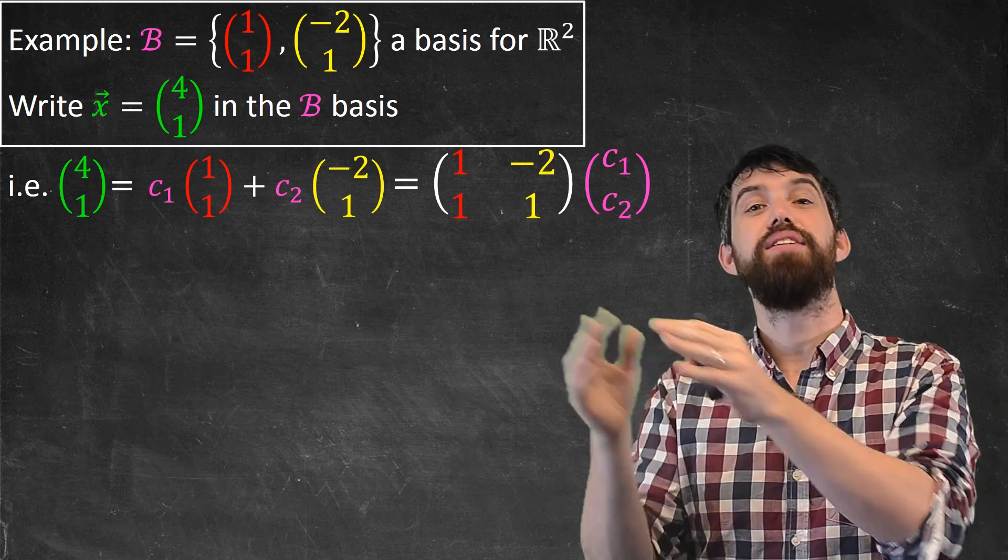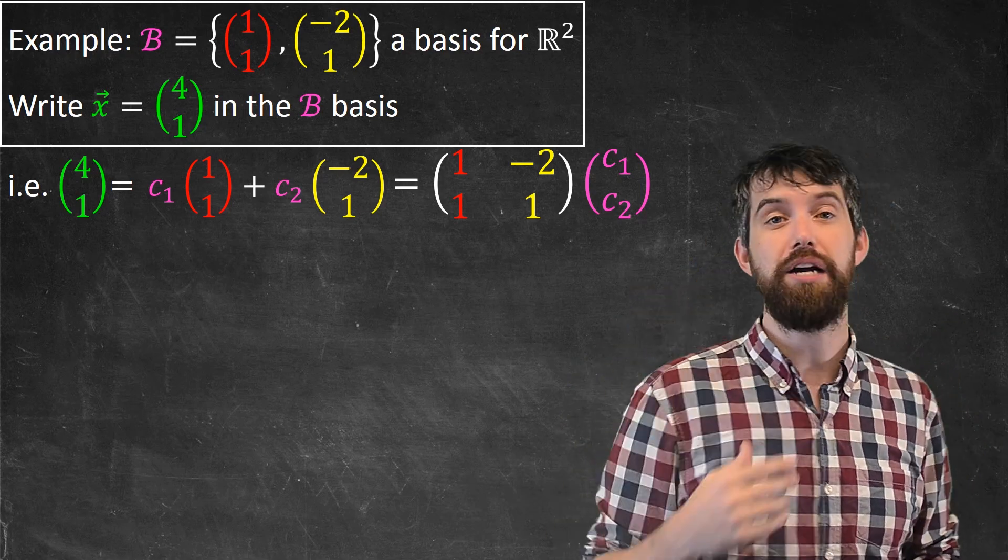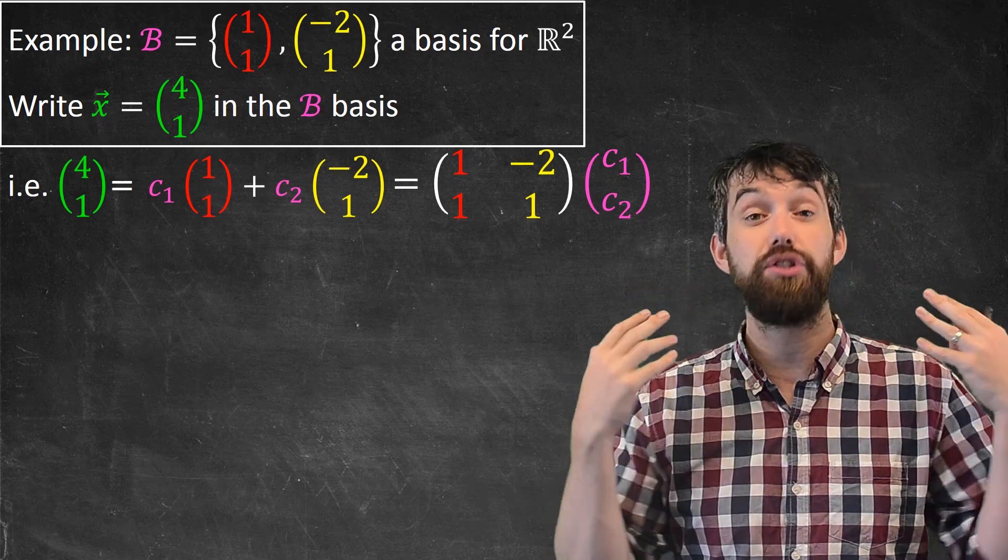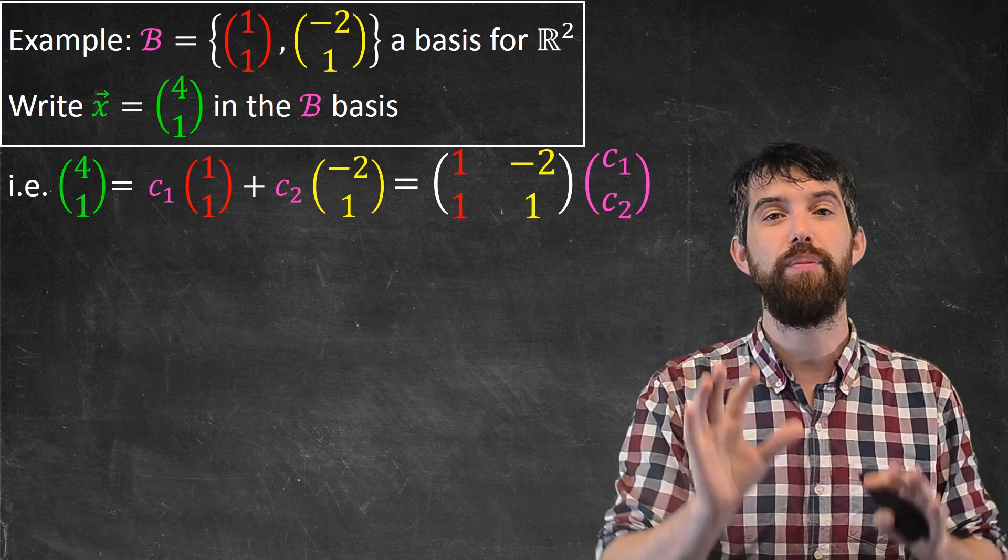Matrix times a vector is equal to some other vector, and I want to solve that system. I could use some row reductions, I could use my normal trick to solve a linear system of equations, but I want to talk about it in terms of invertible matrices.